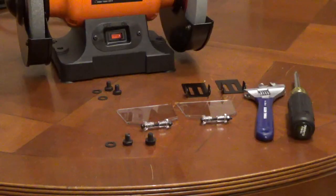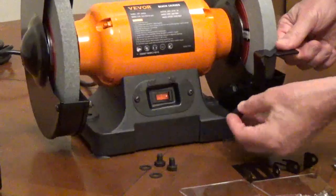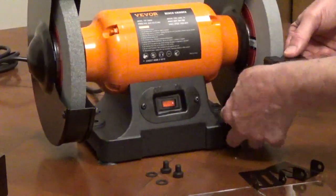Attach the right tool rest with the V-Groove with two bolts and two washers to the inside bottom of the right wheel guard. The top slot goes around the nut on the wheel guard.